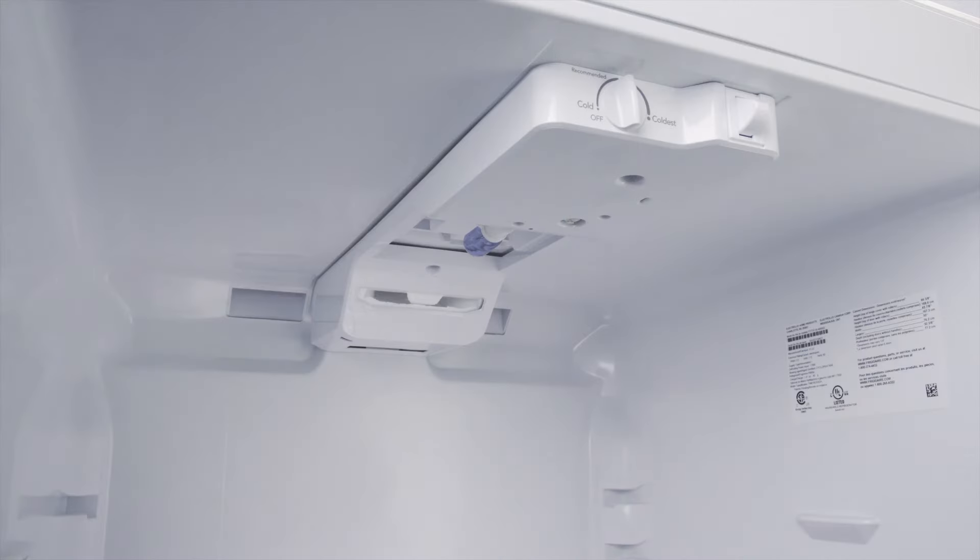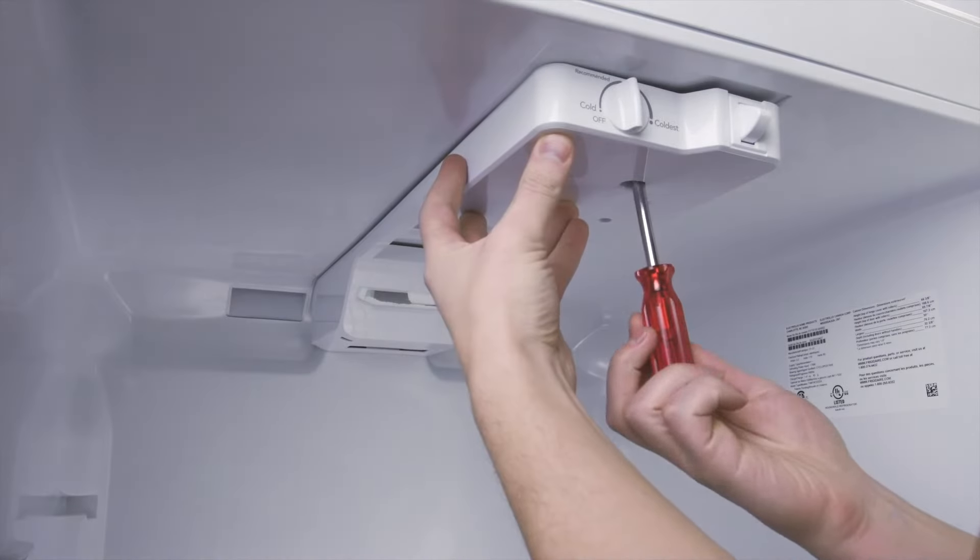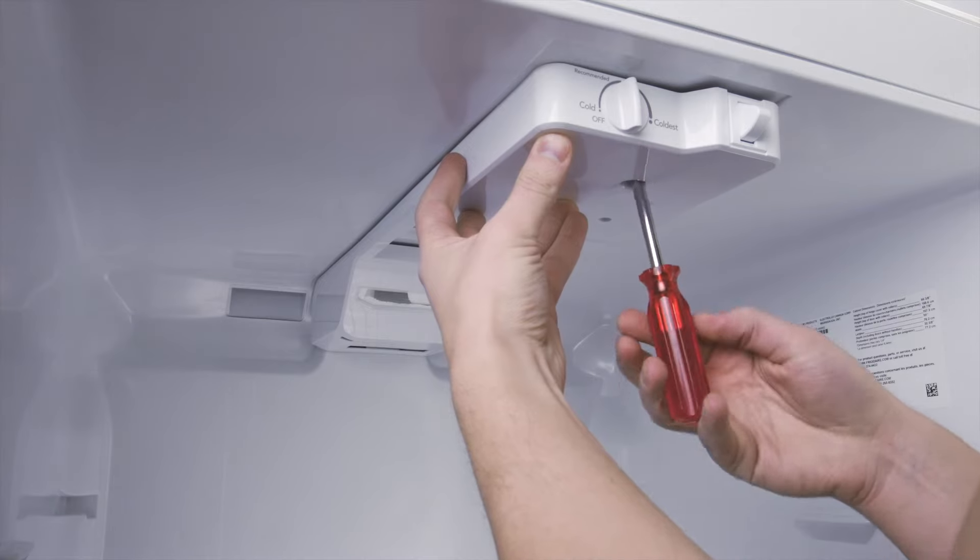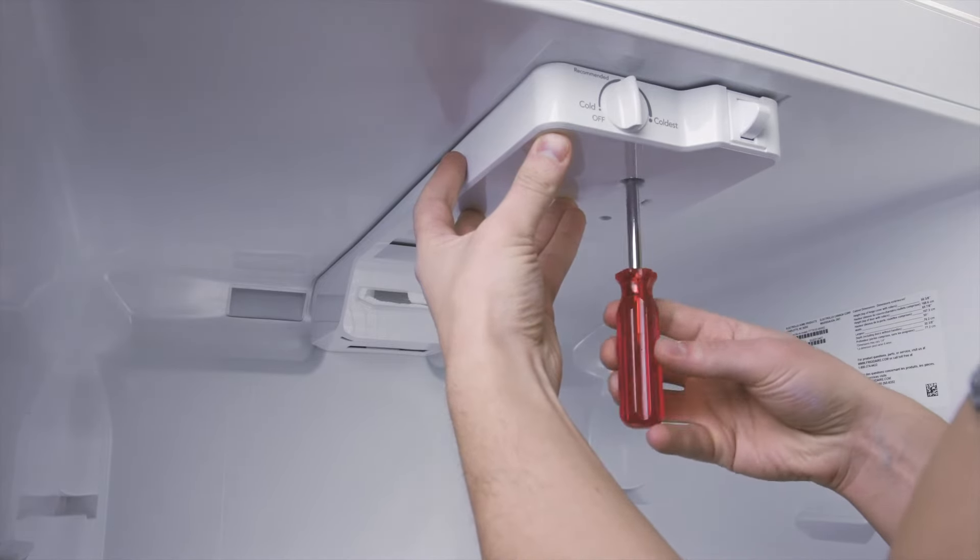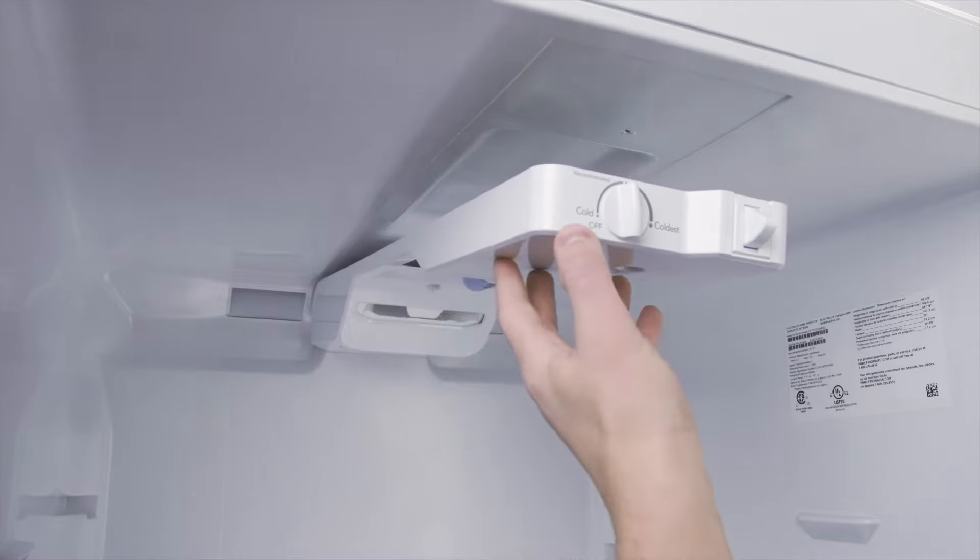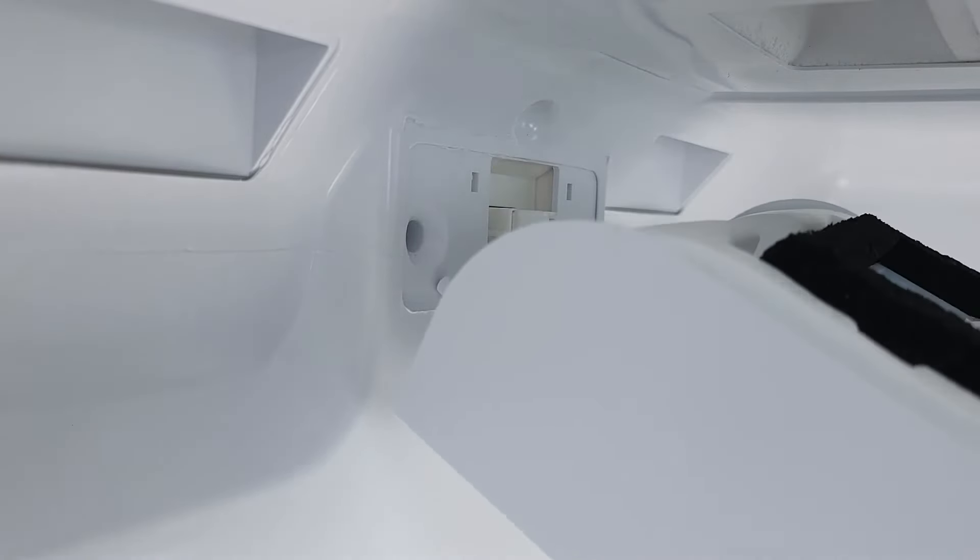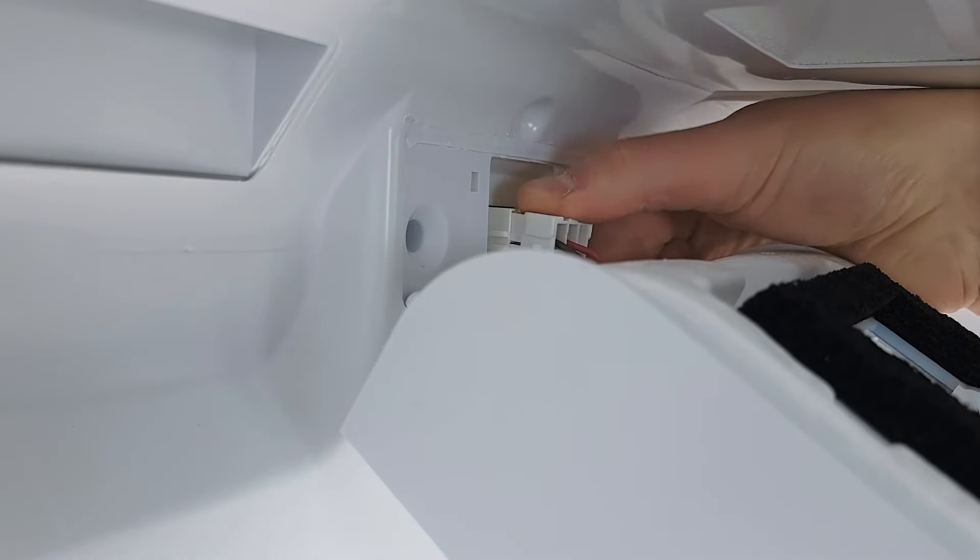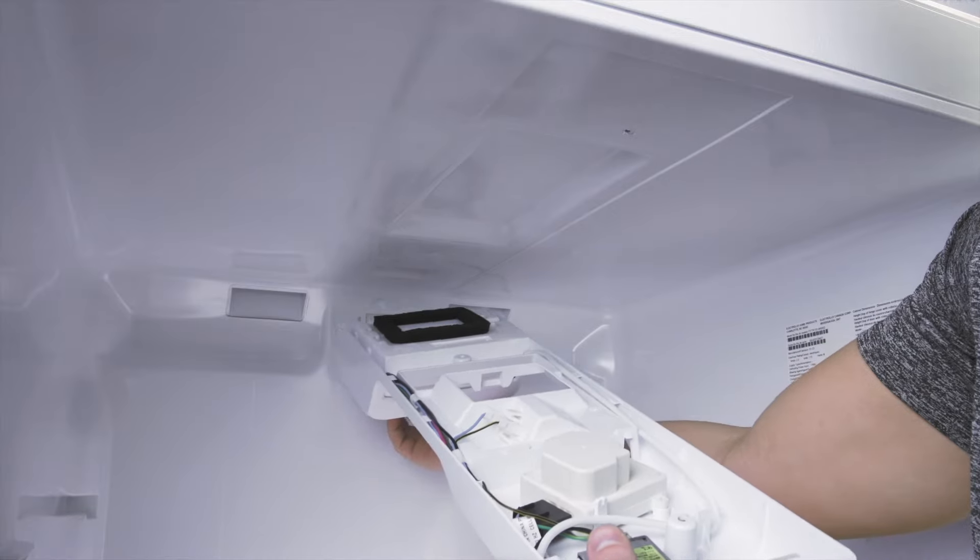To access the thermostat, you'll have to remove the control module, which is normally at the top of the fridge. Remove the screws and lower the control housing. It might be held in by plastic tabs, so don't force it or it might break. In some cases, you can disconnect the wires and remove the entire housing.